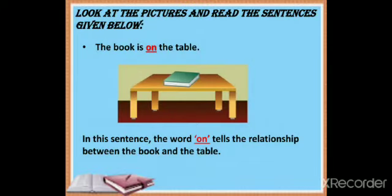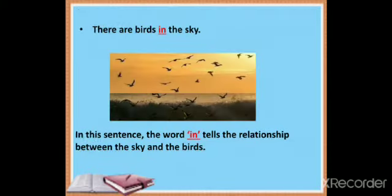Look at the pictures and read the sentences given below. The book is on the table. In this sentence, the word 'on' tells the relationship between the book and the table. There are birds in the sky. In this sentence, the word 'in' tells the relationship between the sky and the birds.